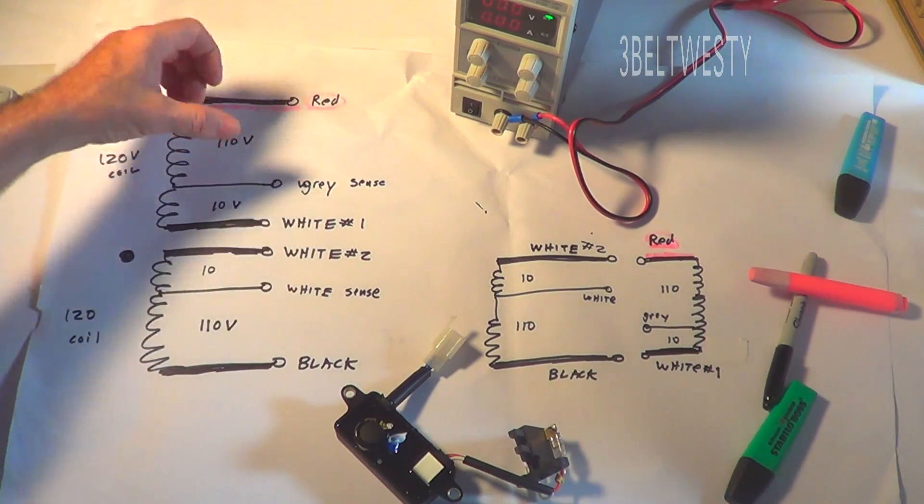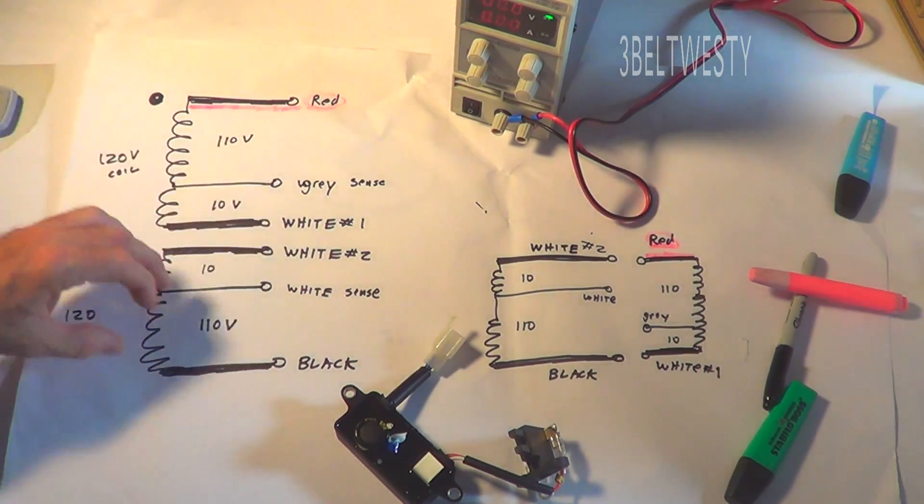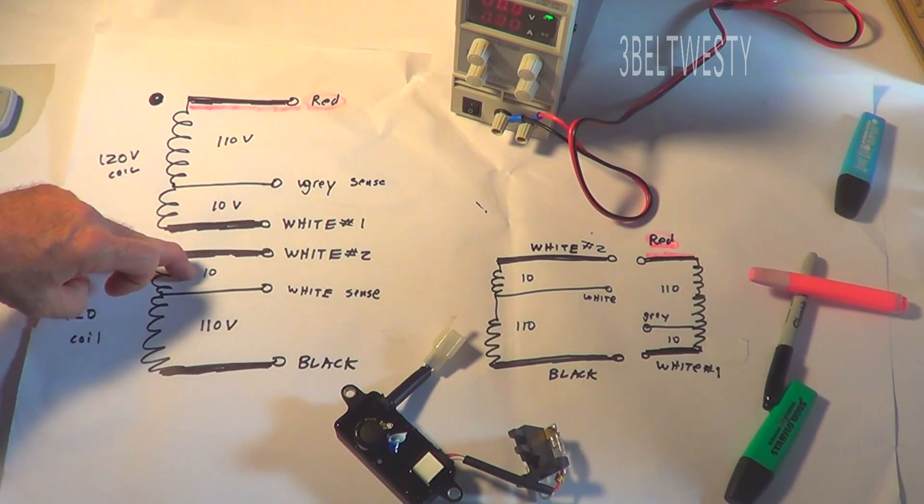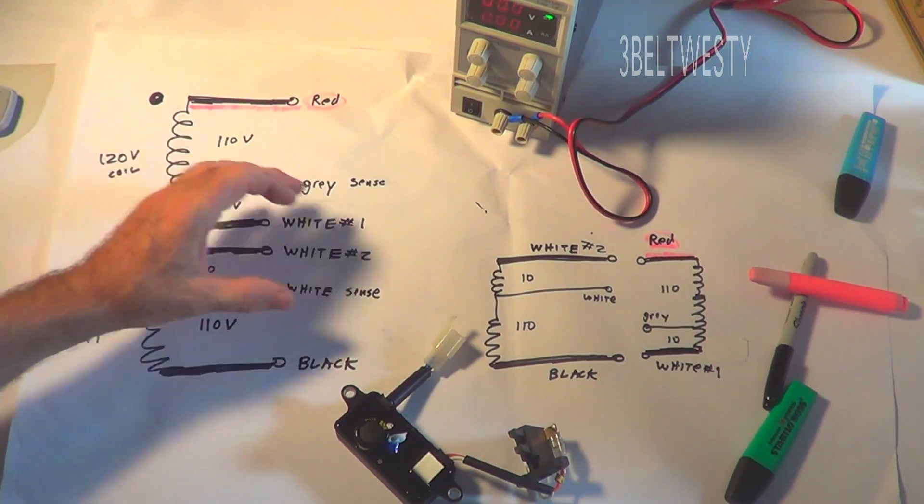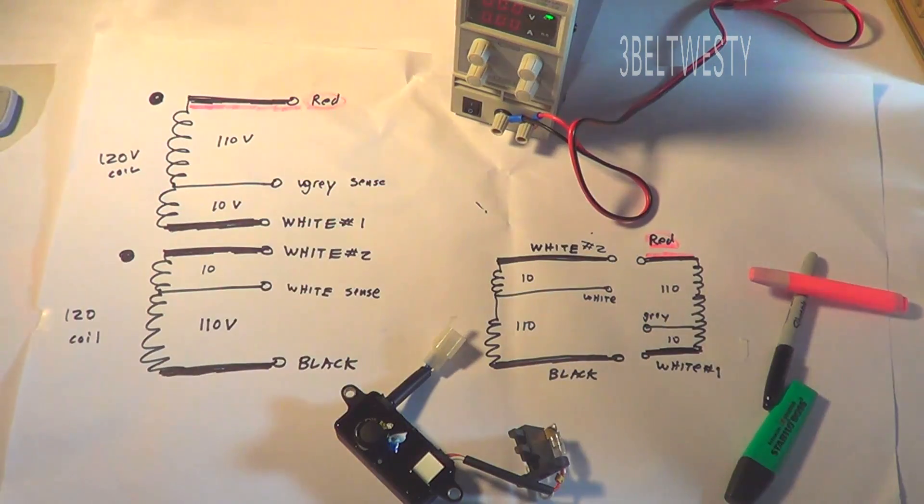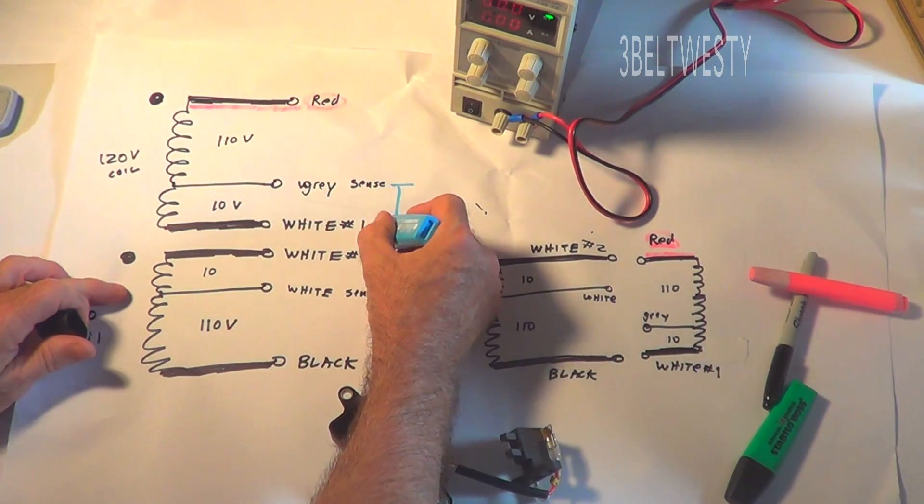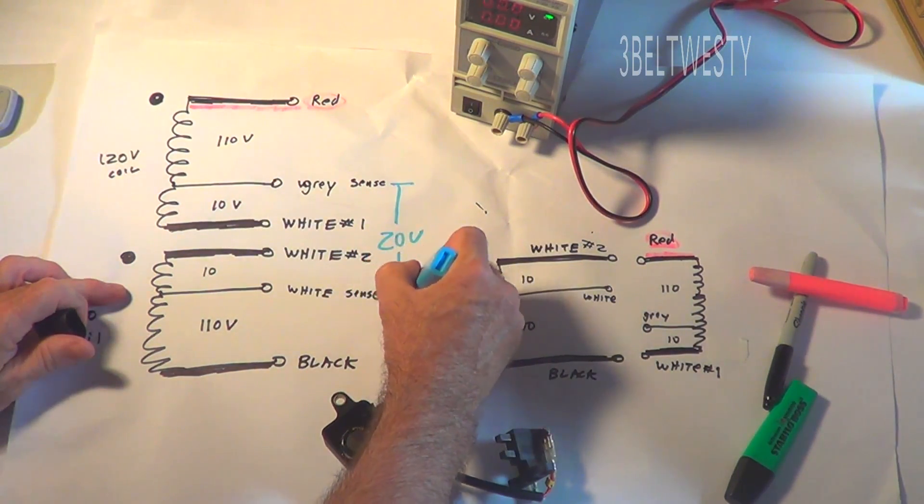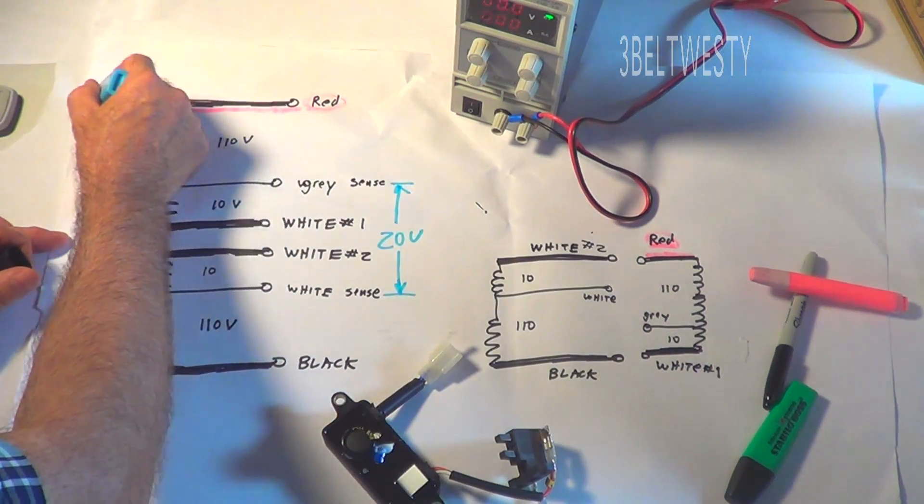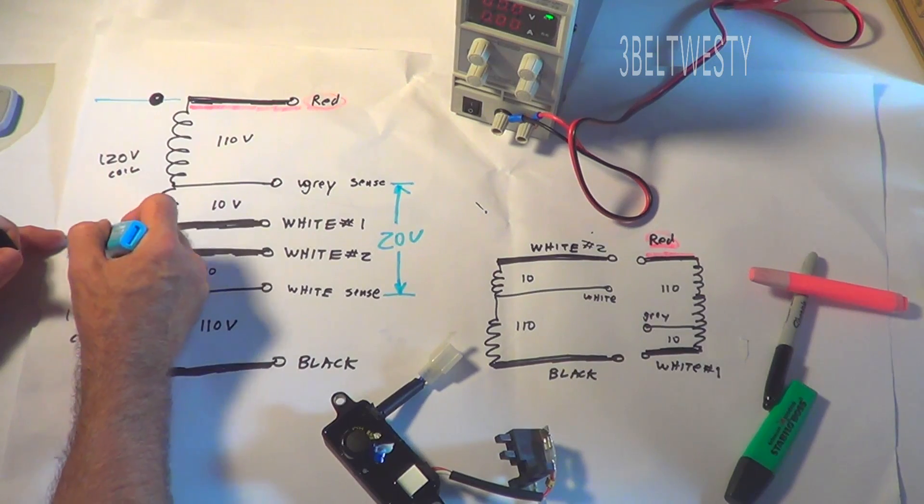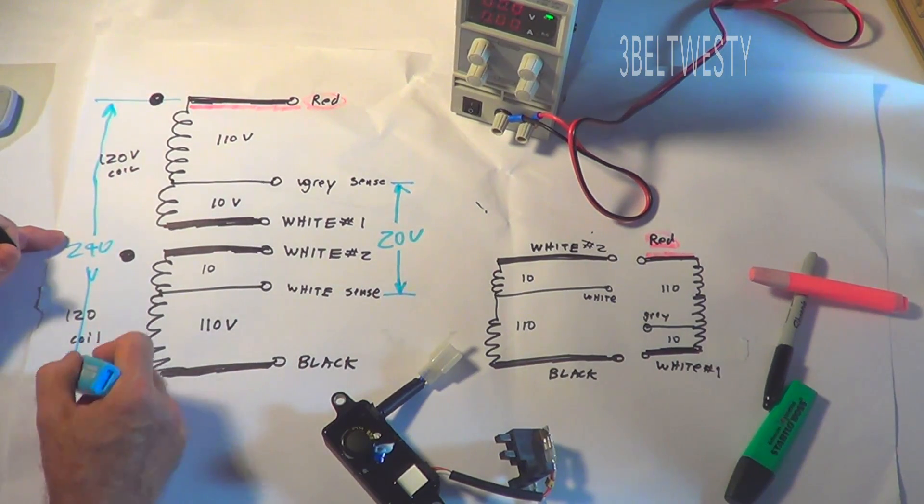The AVR here, which is the control, controls the voltage on that and looks at the two sense wires, the gray and the white. Just for argument's sake, there's roughly about 10 volts across this wire set, 10 volts on this tab. So when it's running here across the two senses, it's roughly about 20 volts in the stock condition.